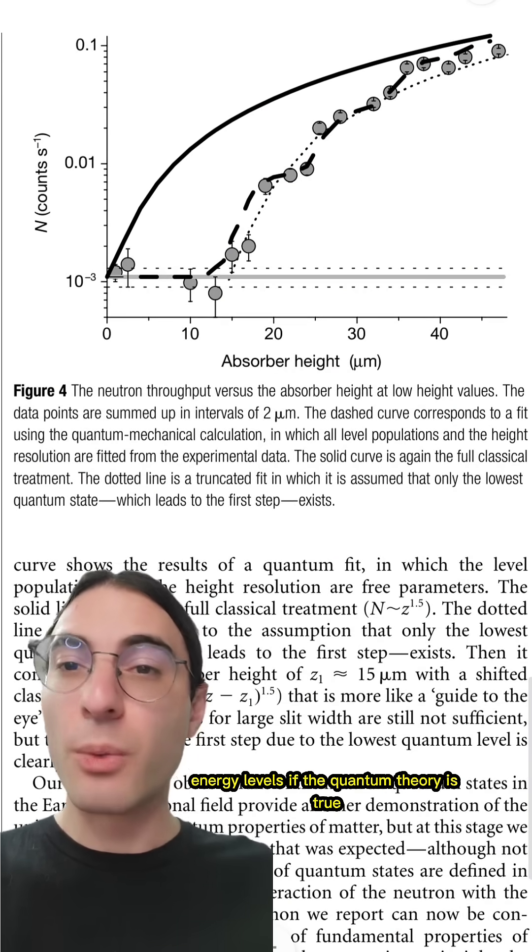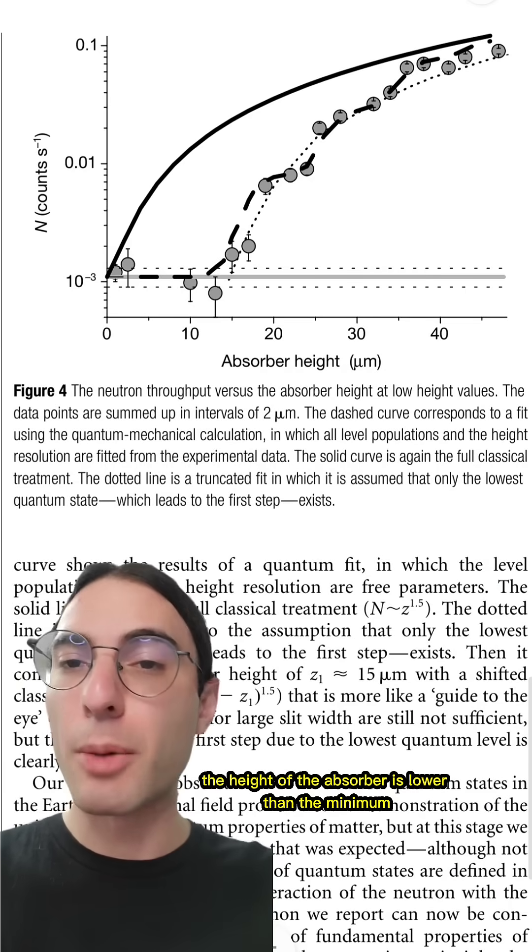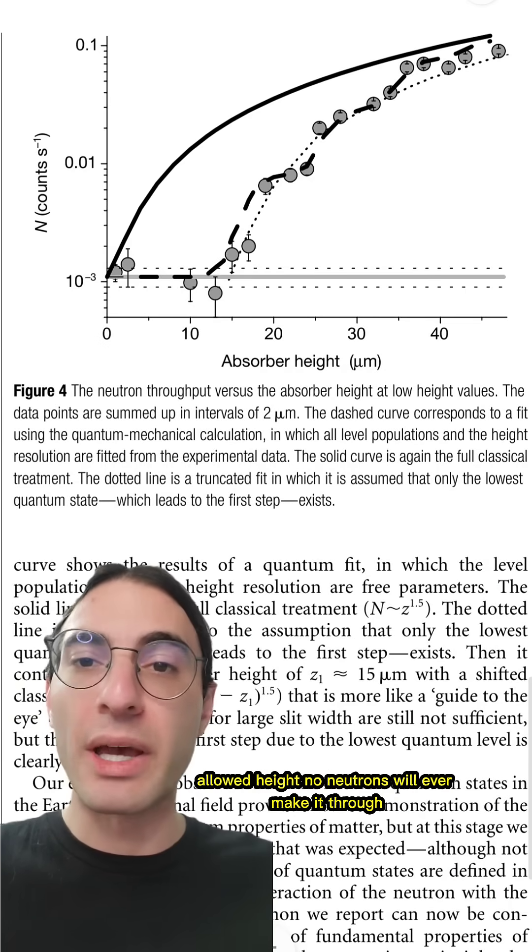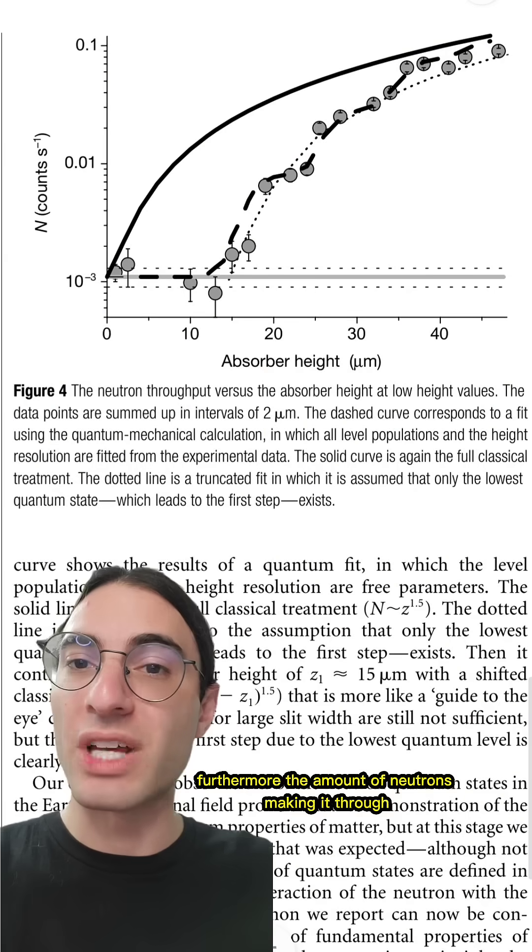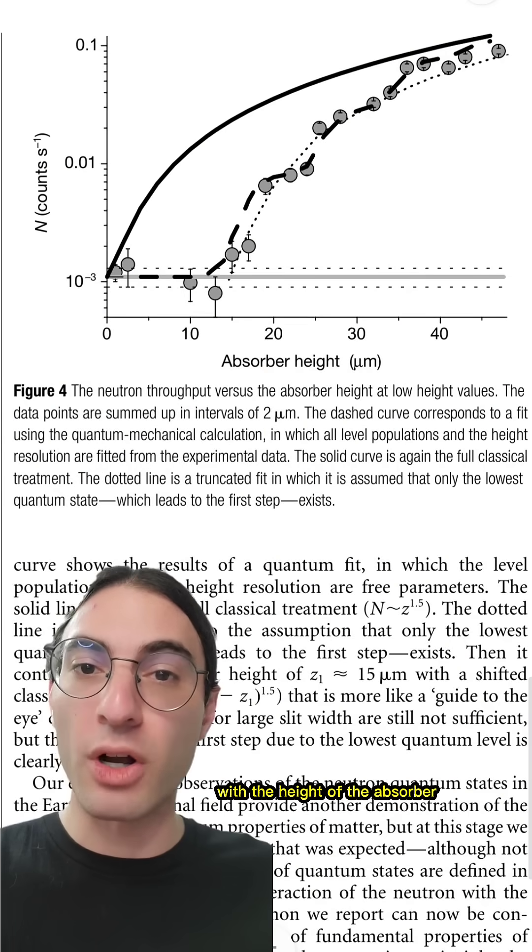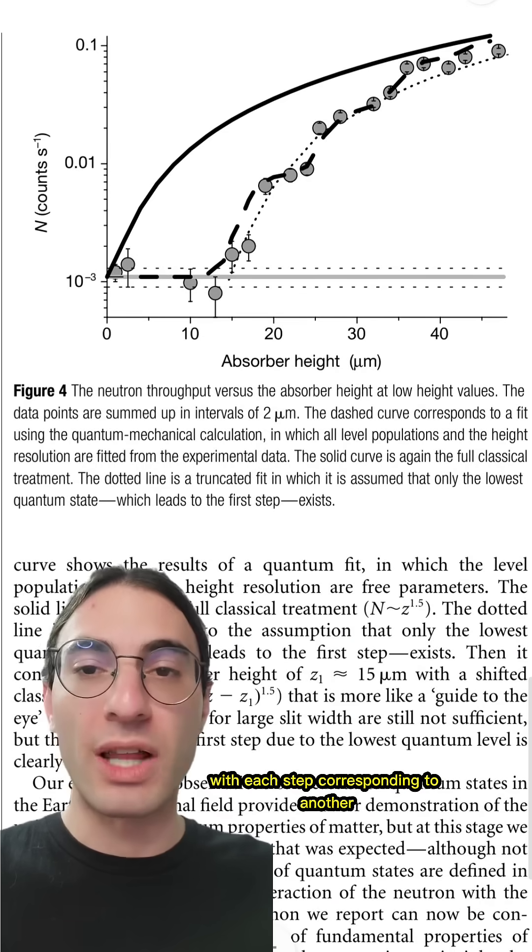If the quantum theory is true, when the height of the absorber is lower than the minimum allowed height, no neutrons will ever make it through. Furthermore, the amount of neutrons making it through should increase in steps with the height of the absorber, with each step corresponding to another allowed energy level.